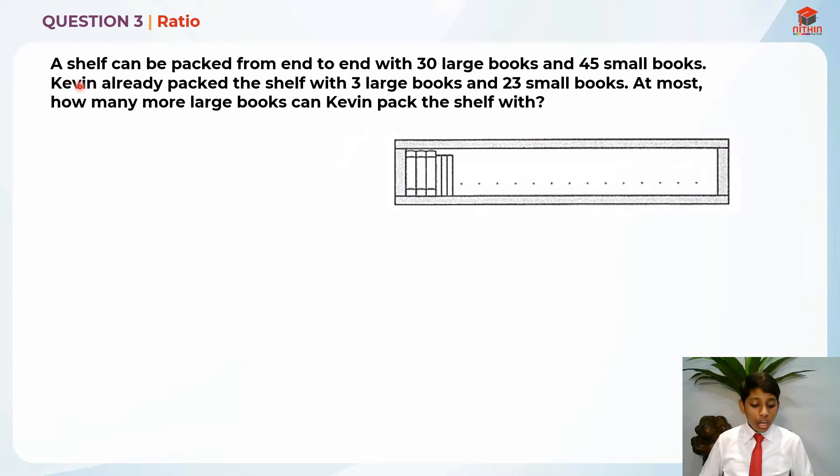A shelf can be packed from end to end with 30 large books and 45 small books. Kevin already packed the shelf with 3 large books and 23 small books. At most, how many more large books can Kevin pack the shelf with?